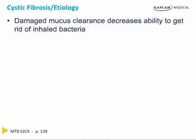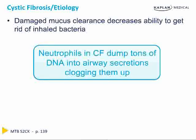Focusing on the lungs, the bronchiectasis seen in CF is a result of damaged mucus clearance. With such thick secretions, it is very difficult for patients to get mucus out of their airways. When it sits in a static nature, bacteria build up and are very difficult to clear. Also, neutrophils in cystic fibrosis dump large amounts of DNA into airway secretions trying to fight infection, but without the ability to clear secretions, the DNA builds up and further clogs the airways.